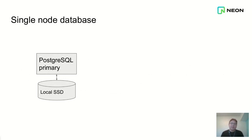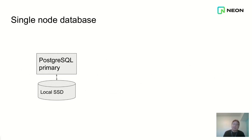Let's start with the traditional Postgres installation. Traditionally, in Postgres and other databases, you have a single instance, and that single instance controls the storage of that node. So it can be a local SSD, or it can be an EBS volume on cloud, or something else. The idea is that that single database node controls that storage.